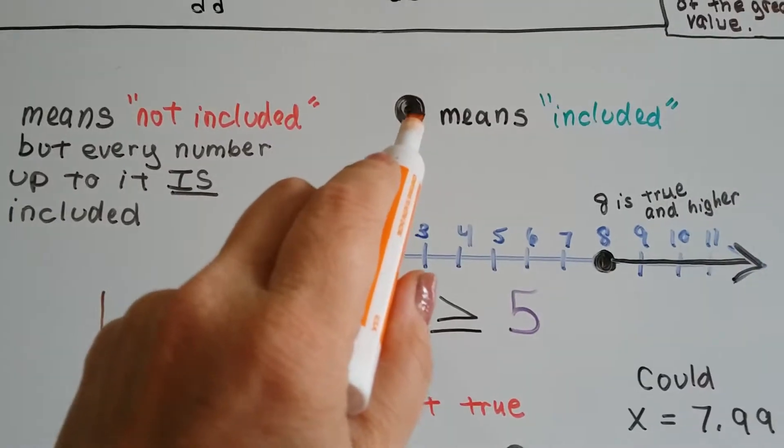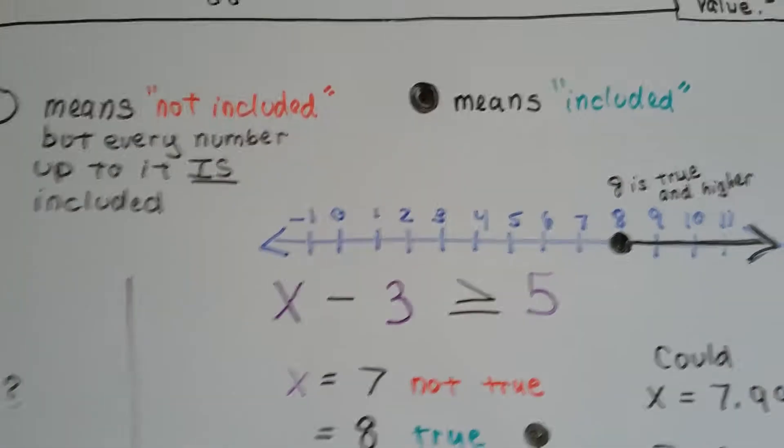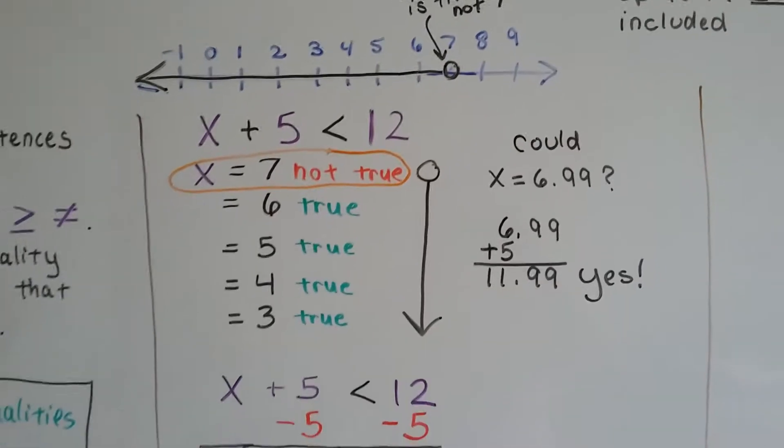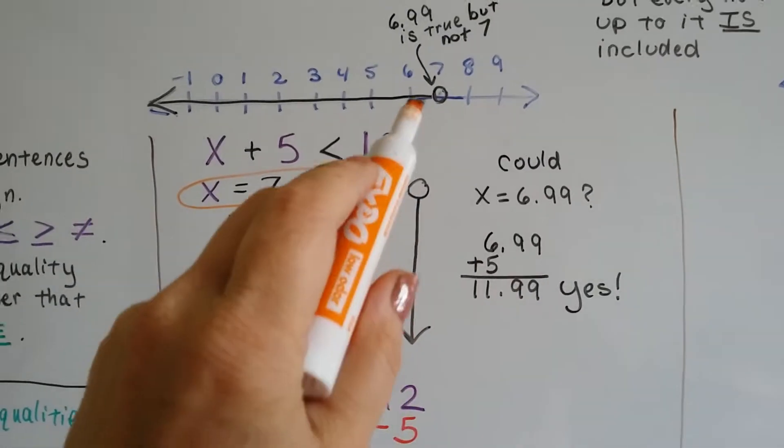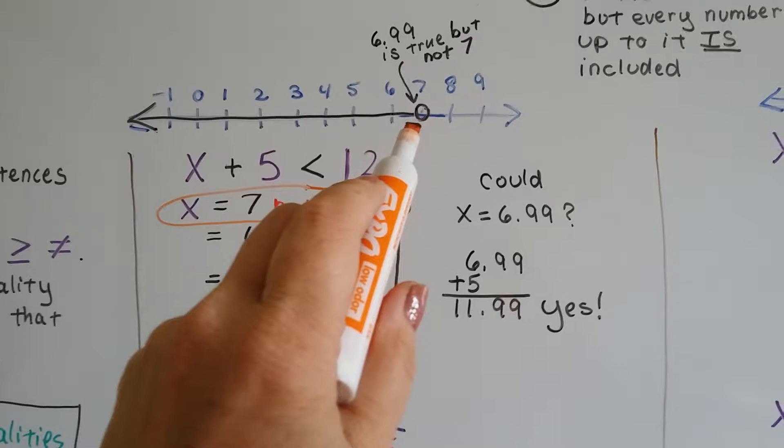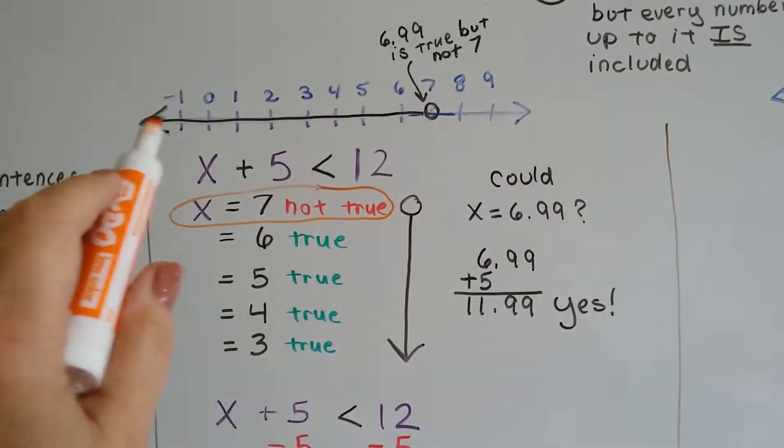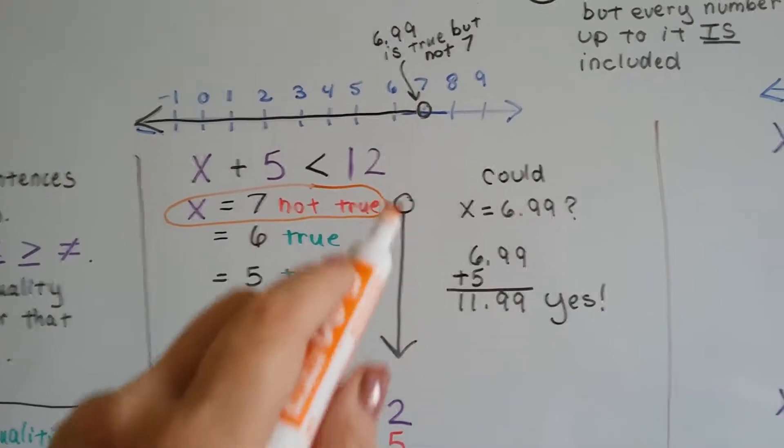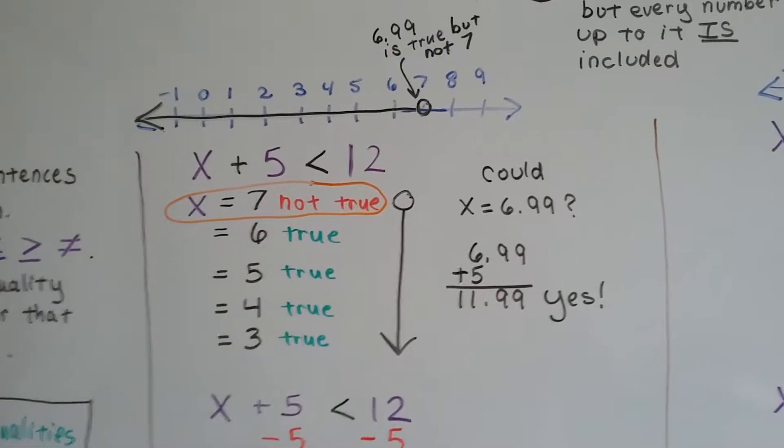If it's a filled in dot, that means it is included, and I'll show you that in a second. But for this one, we know that 11.99 is less than 12, so we've got our open circle and our arrow showing that all the numbers smaller than that would be included, because that would be less than 12.